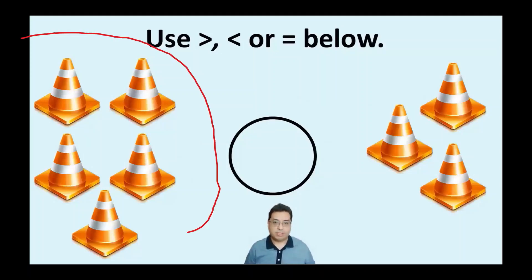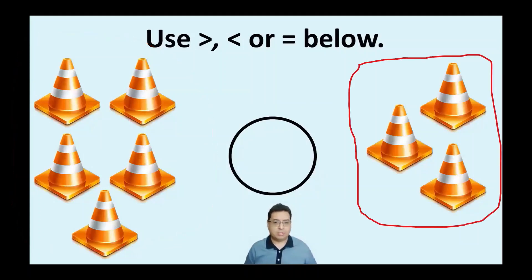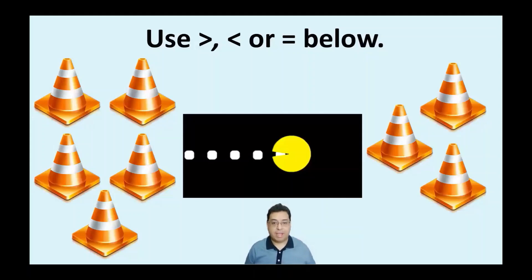So you've got five cones on this side and three cones on the other side here. So which one has more? Right. It's going to be the five. Now this is where I use Pac-Man here, because the symbol above me looks like this. Well, the Pac-Man also looks very similar in that symbol.